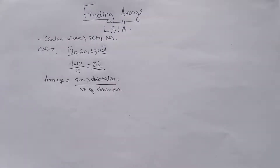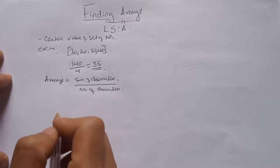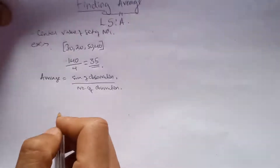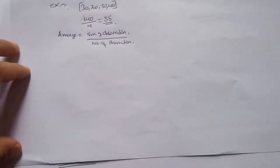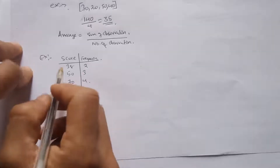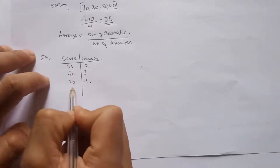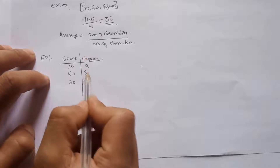One of the common mistakes that people make while calculating averages is the mistake of frequency. Suppose we have scores 38, 50, 70 and the frequencies 2, 3, and 4.